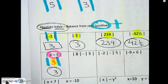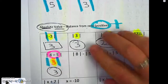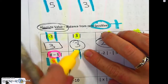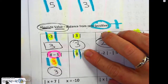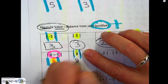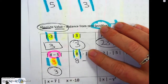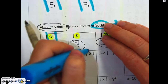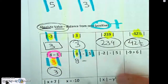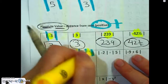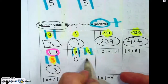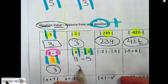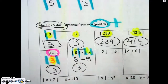And now look at this one — there's just one number, make it positive. Minus — there's just one number, make it positive. Eight minus five is three. Done.